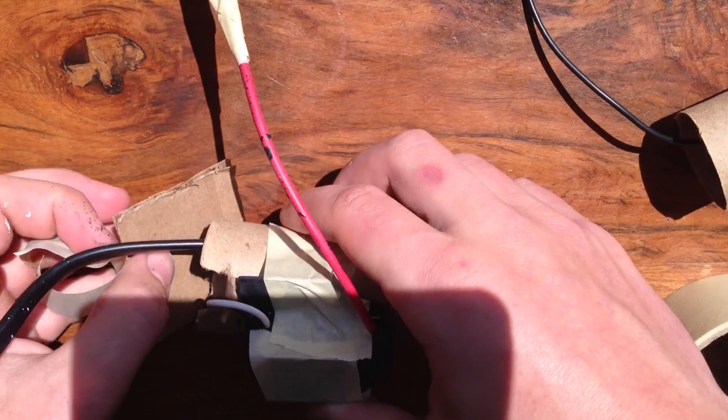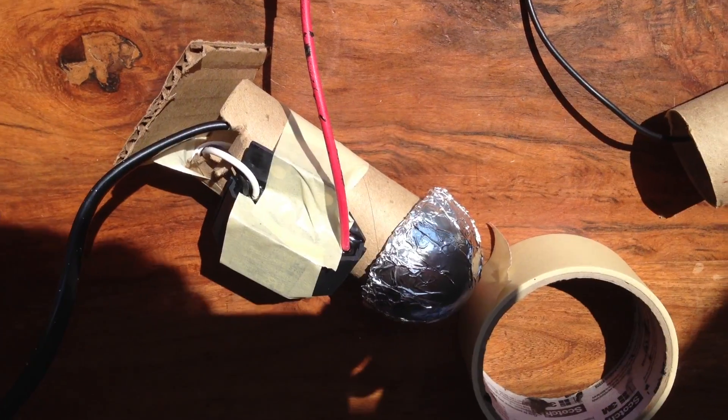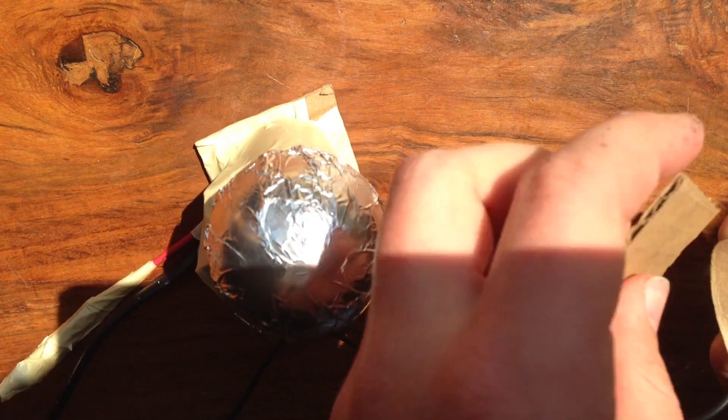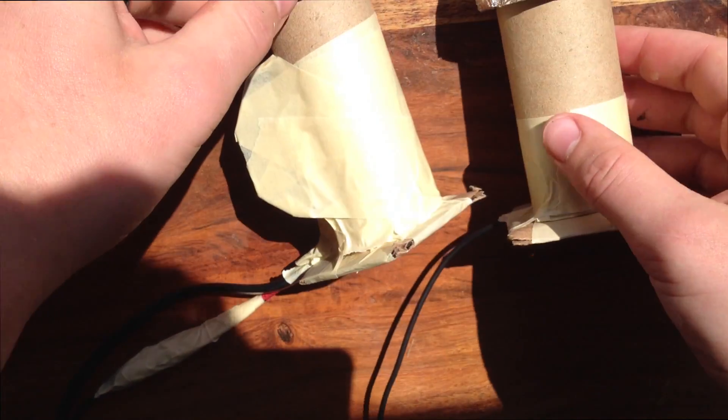Once you've got that taped down, tape one piece of the 2x2 cardboard to the bottom. Now tape the other piece of cardboard to the bottom of the other tube. When you're done, everything should look like this.